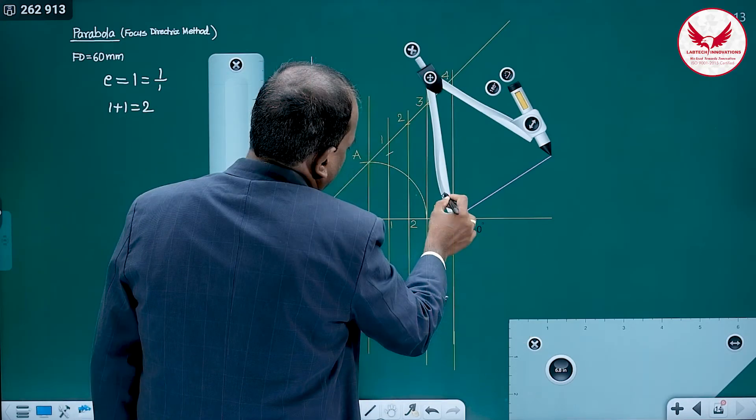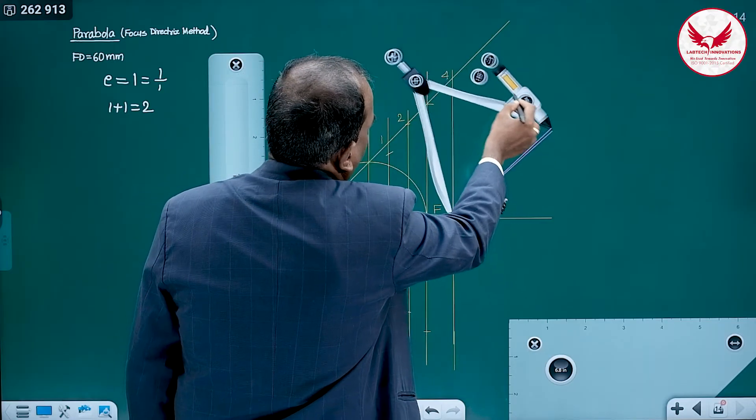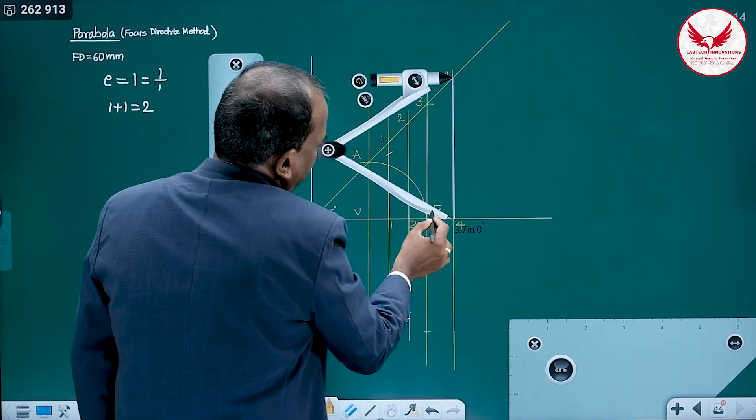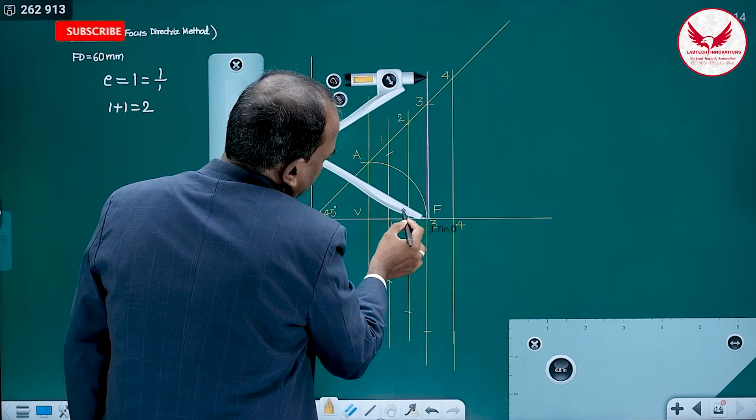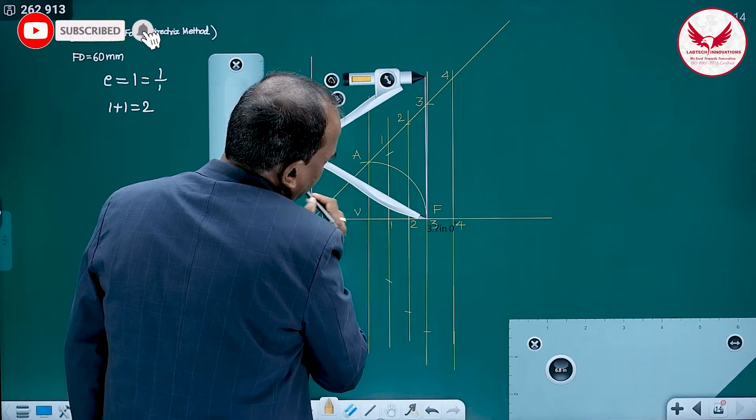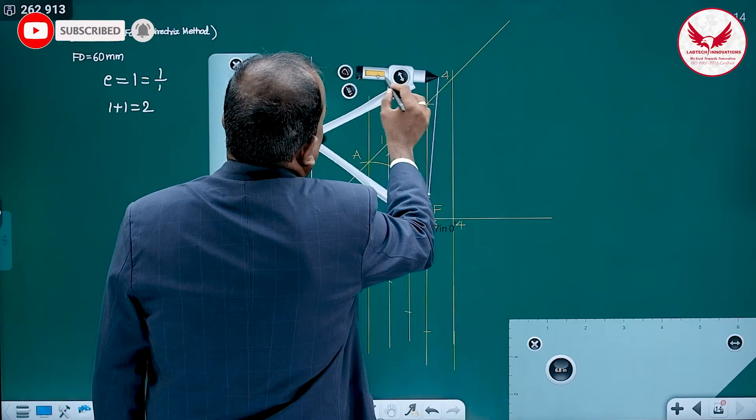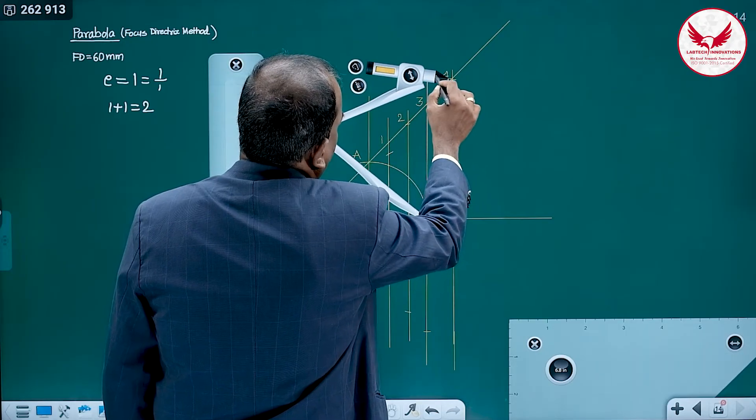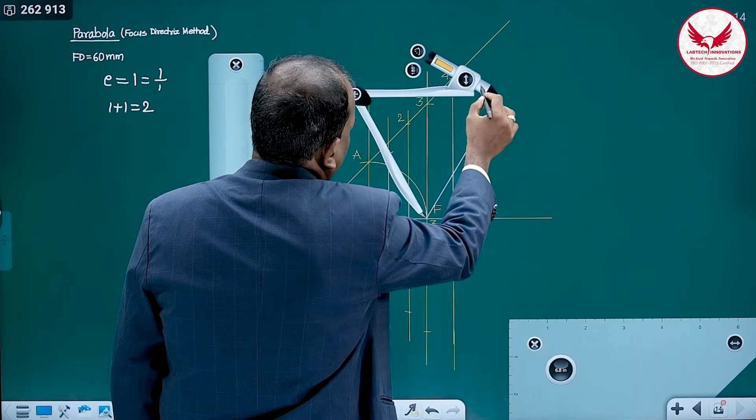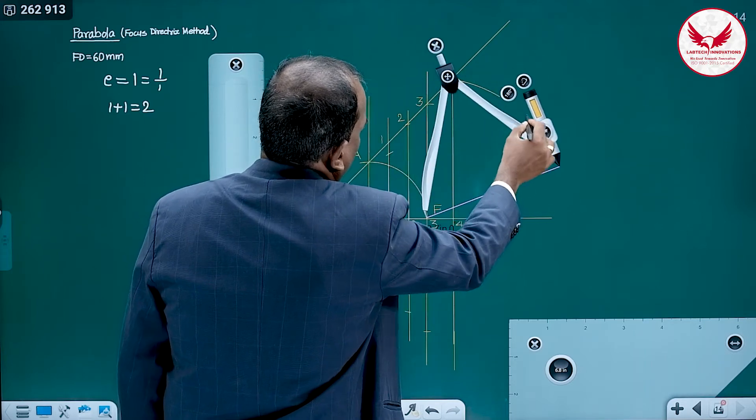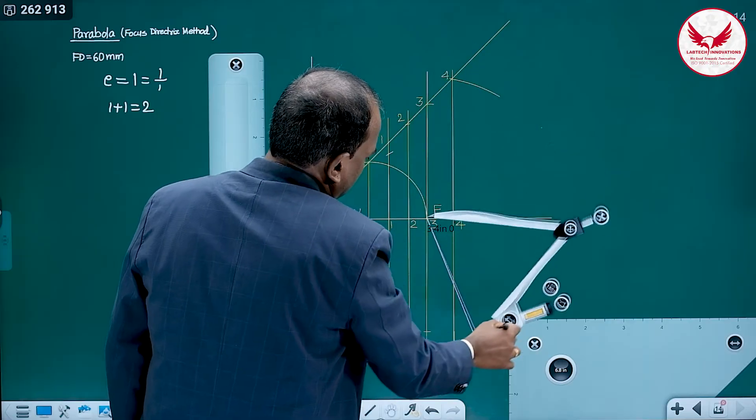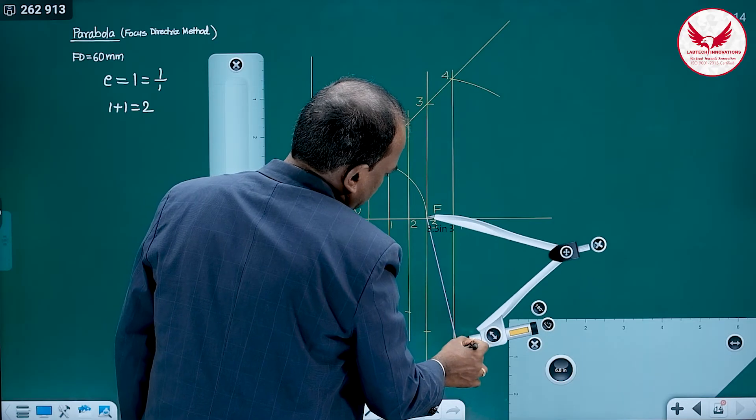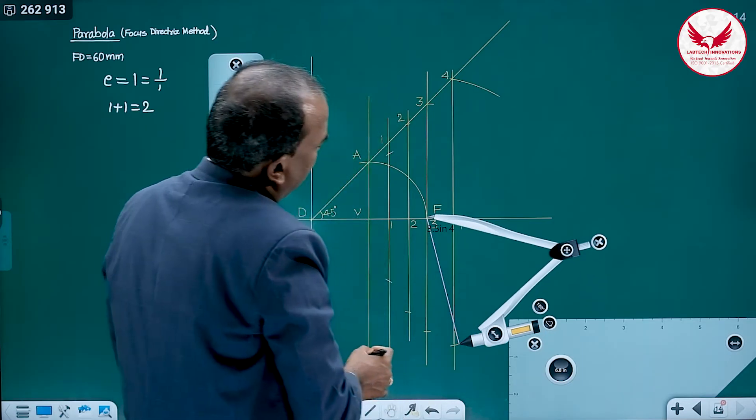Then keep the compass at the focus, increase its radius. That radius will be equal to 3 to 3 and with the same distance, compass will be at the focus. For cutting the arc, always your compass should be at the focus. Hence, the point on 3 to 3 line will be same, same point on upper side and on lower side, we get this point.